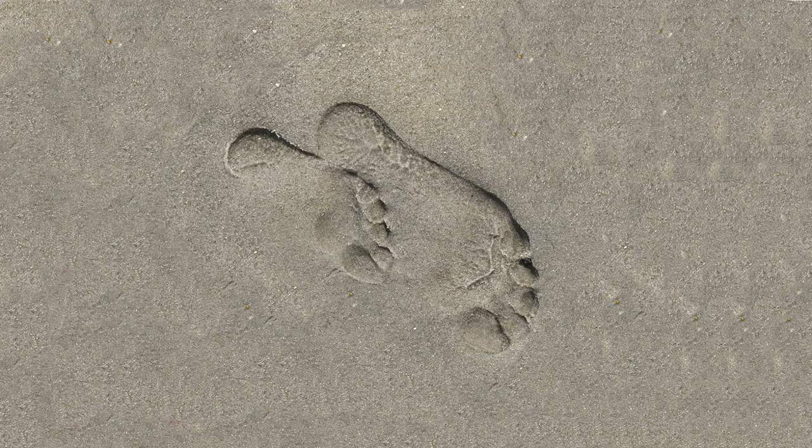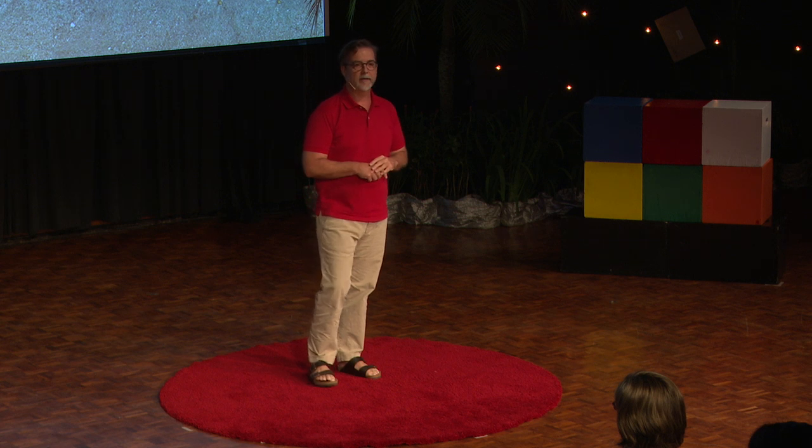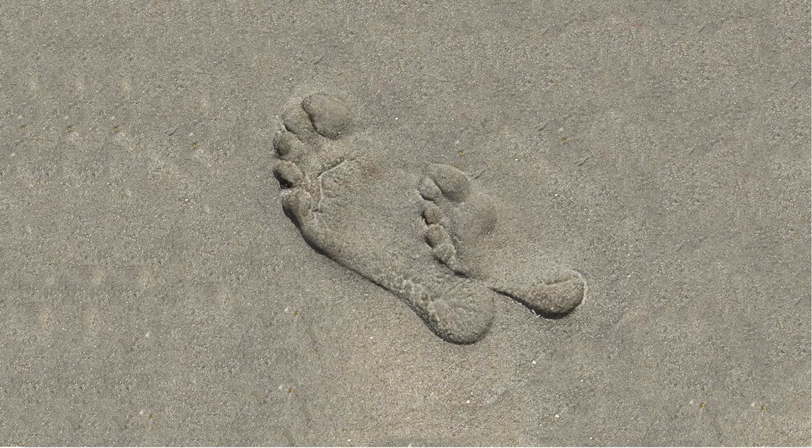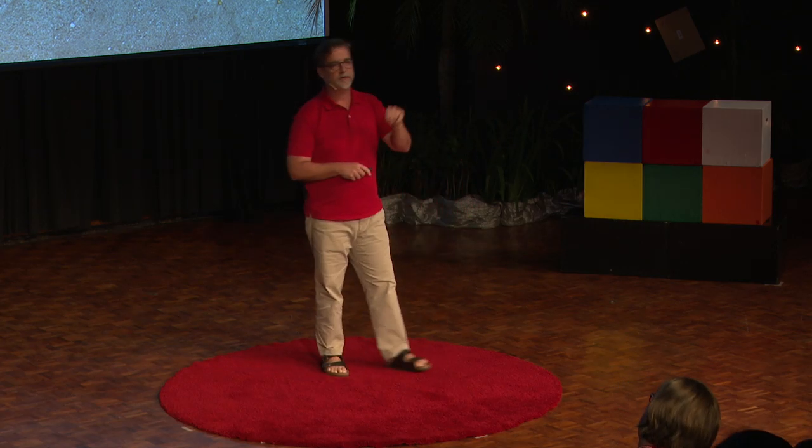Two footprints in the sand. Rotate the image 180 degrees and now they look embossed. They're coming up out of the sand. Two footprints in the sand. Our brains' best guess, the assumption, the unconscious assumption that's happening is that light comes from above. So it shifts our perception of what's going on. So our brains are making a lot of decisions for us in our perceptions.